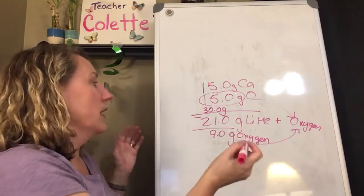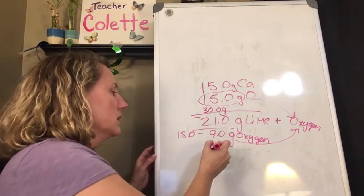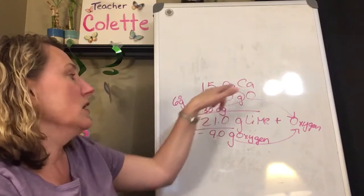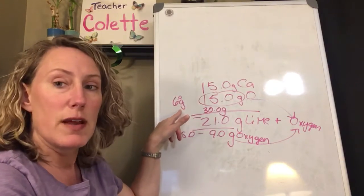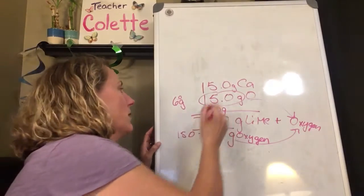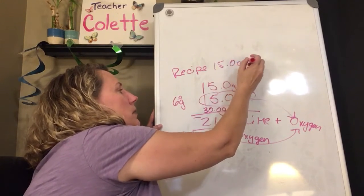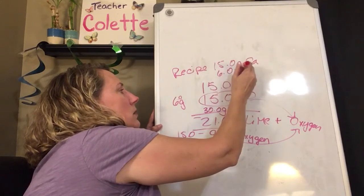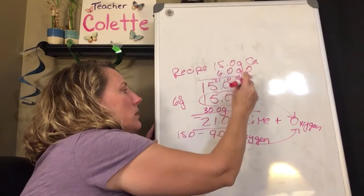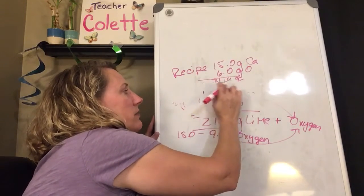So the recipe then would be what's 15 minus 9. 15 minus 9 is going to be 6. I use 6 grams, 6.0 grams of oxygen to make my recipe. So that means I use all of the calcium and 6 grams of oxygen. So if my recipe then is 15.0 grams of calcium and 6.0 grams of oxygen, that gives me 21.0 grams.